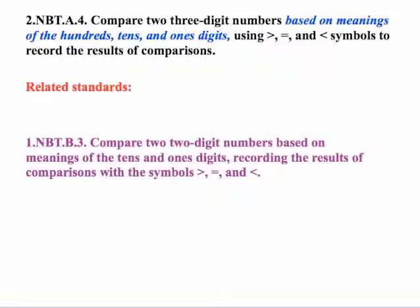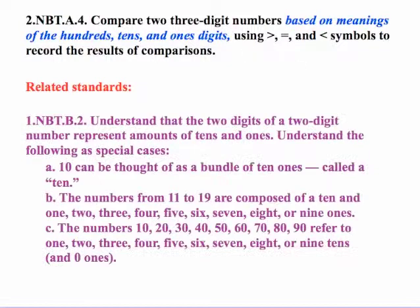Back in the first grade, they had a very similar standard. The only difference was that they were comparing two-digit numbers instead of three-digit numbers like they are now in second grade. Back in first grade, we had another standard that links to this because of place value. It's understanding the two digits of a two-digit number represent amounts of tens and ones. And then we have the special cases where ten can be thought of as a bundle of ten ones, called the ten.